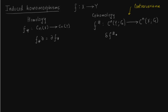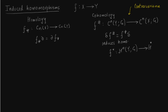We have these commutativity relations — a commutative diagram analogous to what we have in homology. This immediately induces homomorphisms, and again the homomorphism is contravariant. In homology we had a homomorphism from H_n(X) to H_n(Y); here we have a homomorphism between the cohomology groups. So you start with a co-chain map between co-chains and you end up with a homomorphism between cohomology groups.